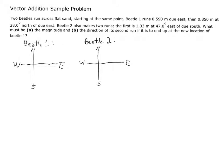Hey all and welcome back. I have another example problem here I wanted to work through with you guys. I want you to go ahead and start by just pausing this video before we even jump in and try this problem on your own. We're told that there are two beetles moving on some flat sand, told about the movement of beetle one and beetle two, and that they end up at the same location. You're given both legs of beetle one's journey and only the first leg of beetle two's journey, and you need to figure out the second leg of beetle two's journey, expressing it as a vector. Go ahead, pause the video and try it out.